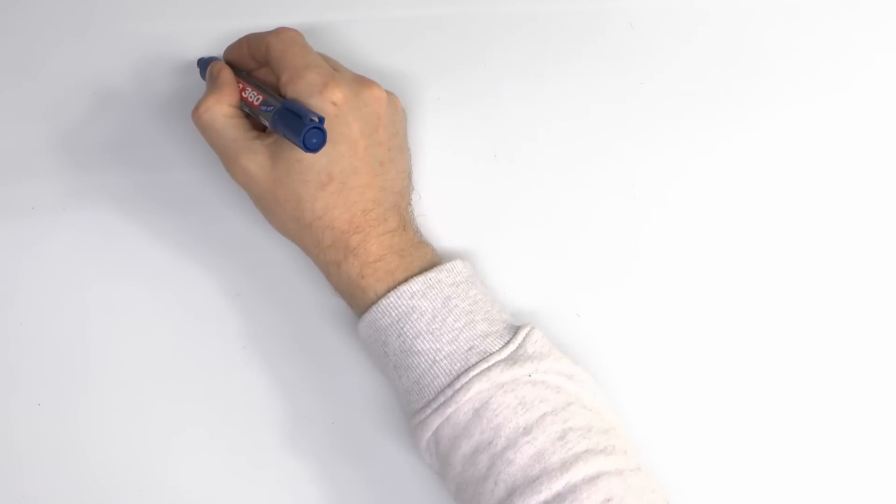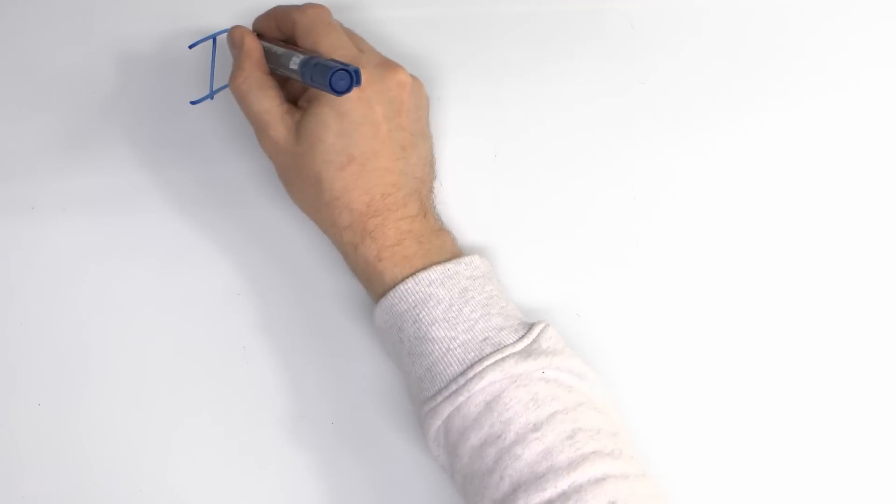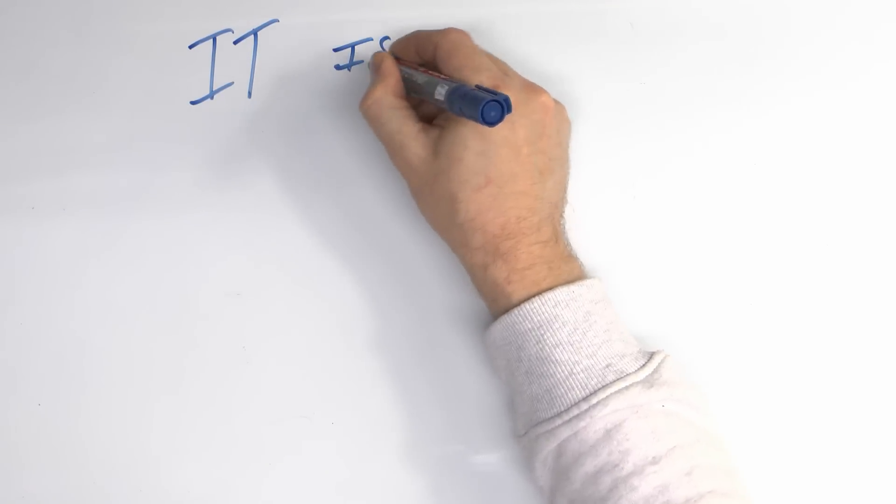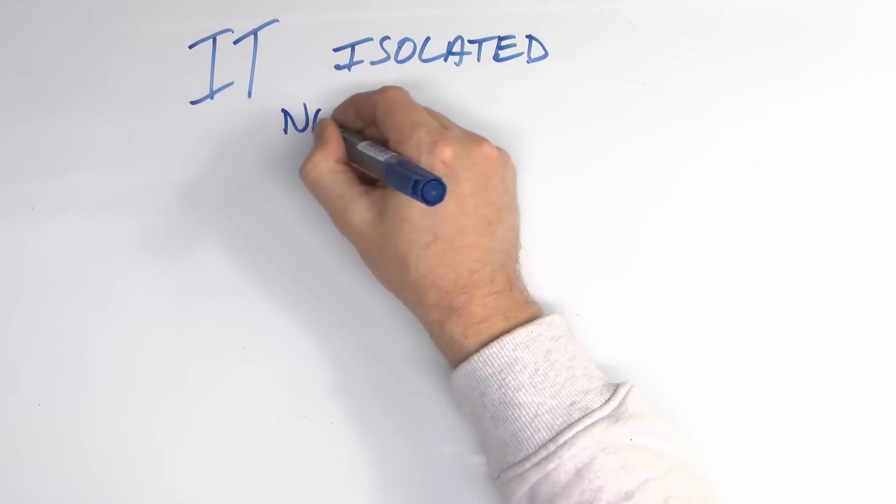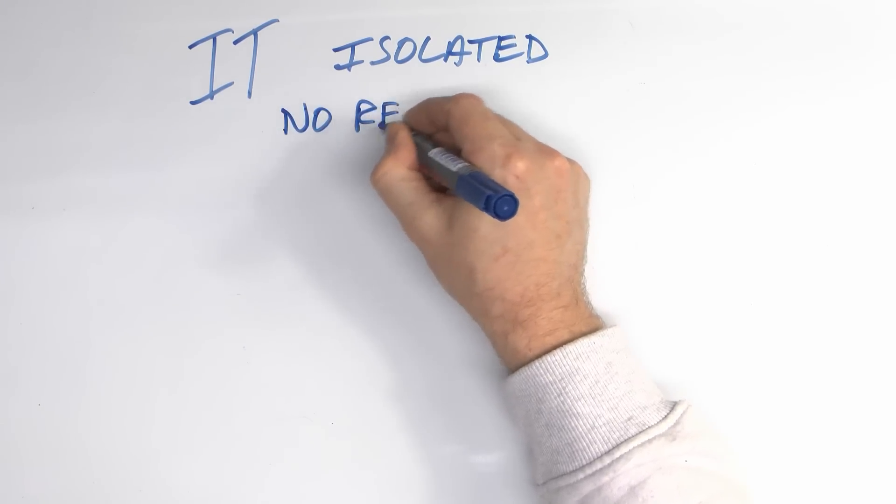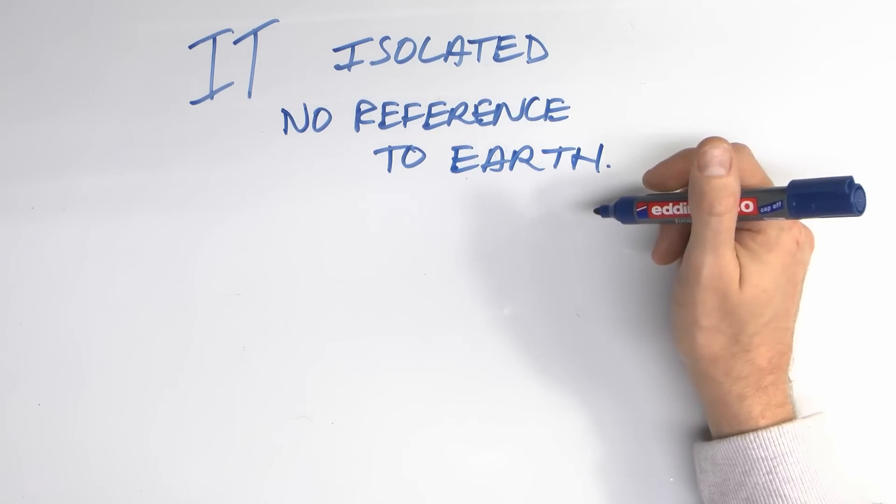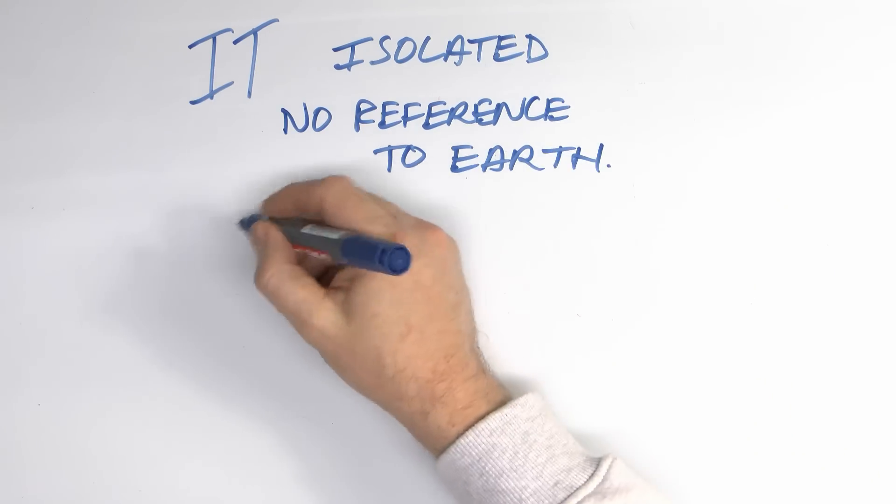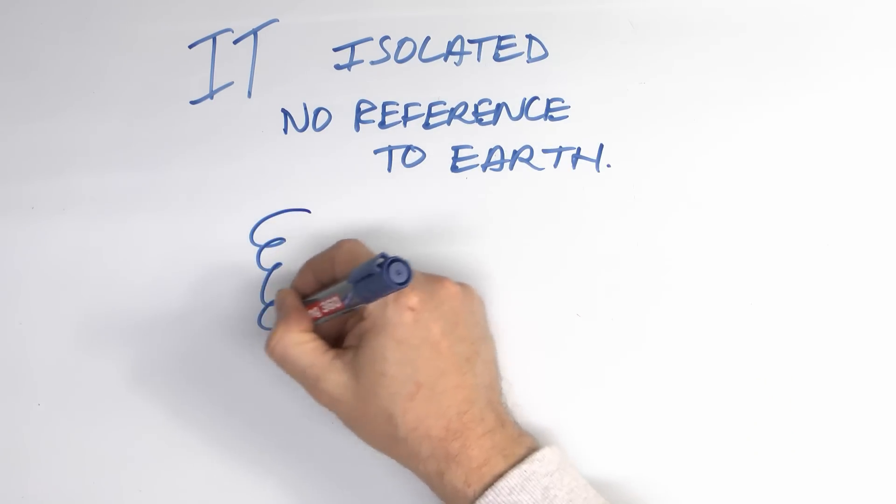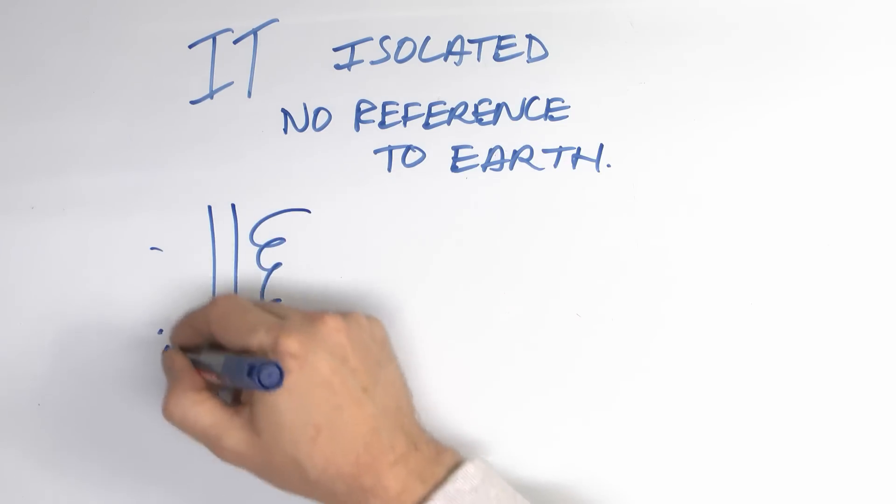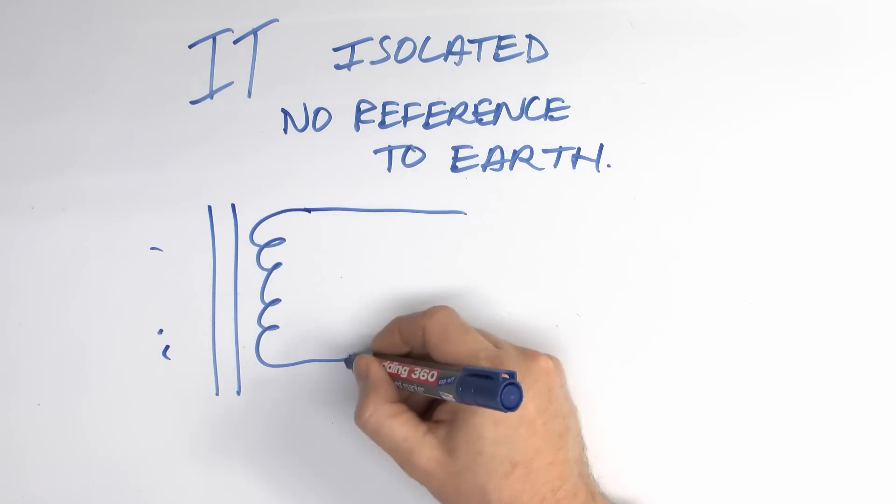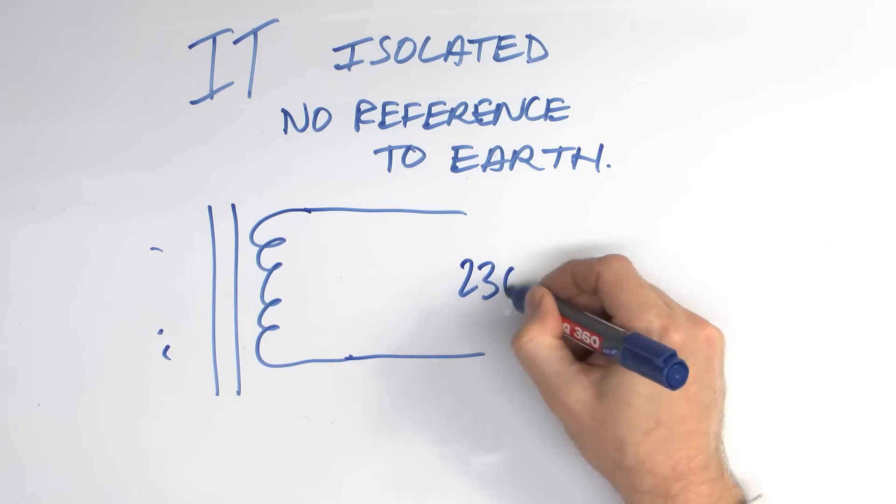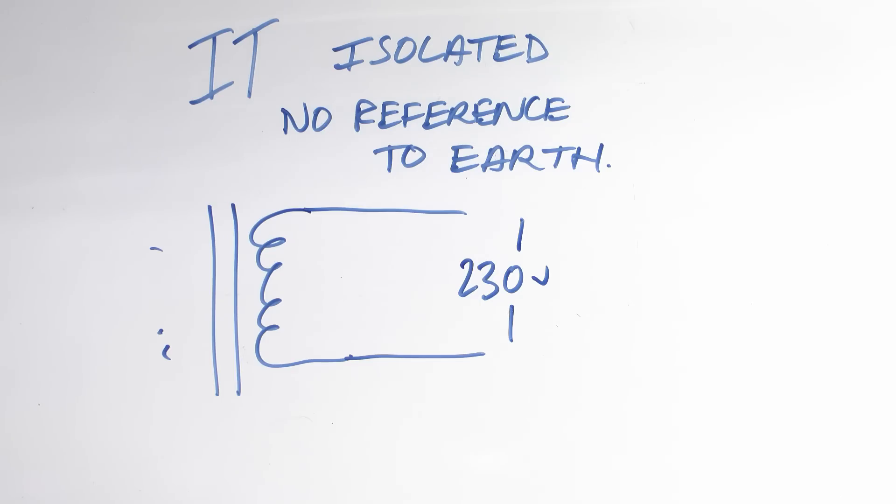Now that small inverter thing we saw there is what's called an IT arrangement, and that's basically an isolated one. Isolated, and there is no reference to the Earth itself. This is exactly the same as an isolating transformer, which we have covered in other videos. So that's where you have your transformer winding, the core there, and also the incoming side over there. Just the two wires coming out, and then you're going to have, say, 230 volts between those. Crucially, neither of these is connected to the Earth itself. So touch either one, you don't get a shock. Grab hold of both, you most definitely do.